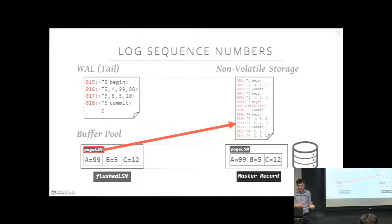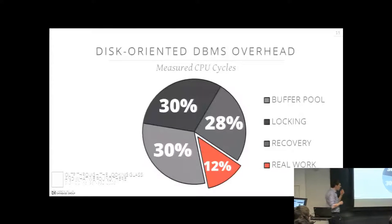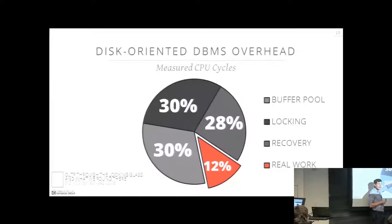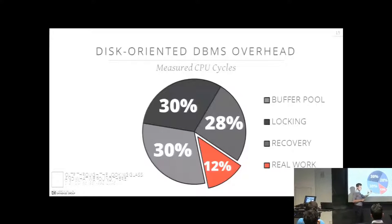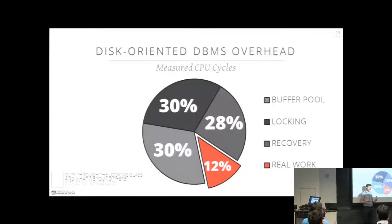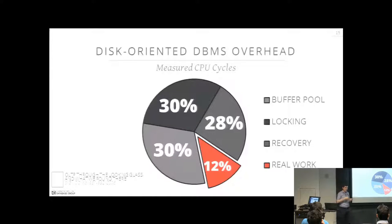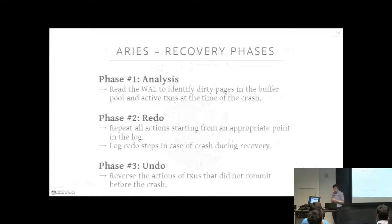In the beginning of the course, I showed a pie chart where the recovery mechanism of a disk-based database system takes 28% of the time — not the disk flush itself, but just managing all that extra metadata and LSNs. This is why we want to avoid all of this in a high-performance in-memory database system; we don't want to pay that 20%+ overhead.